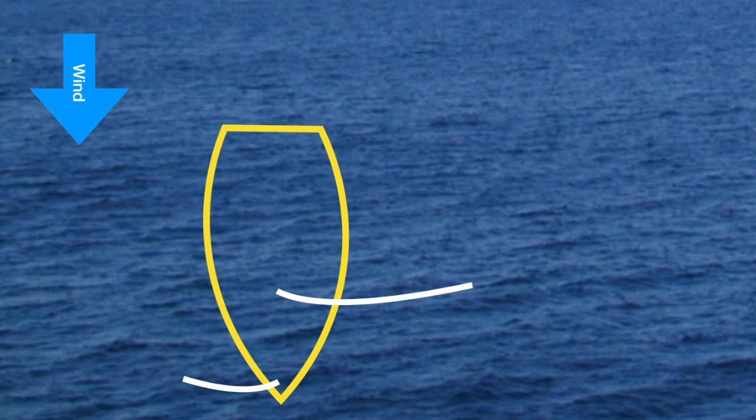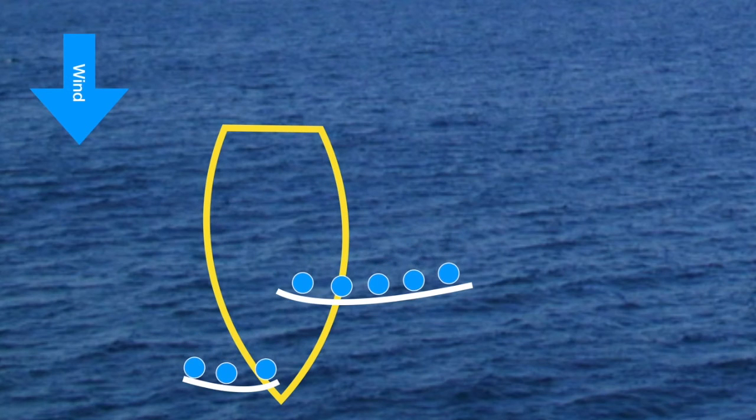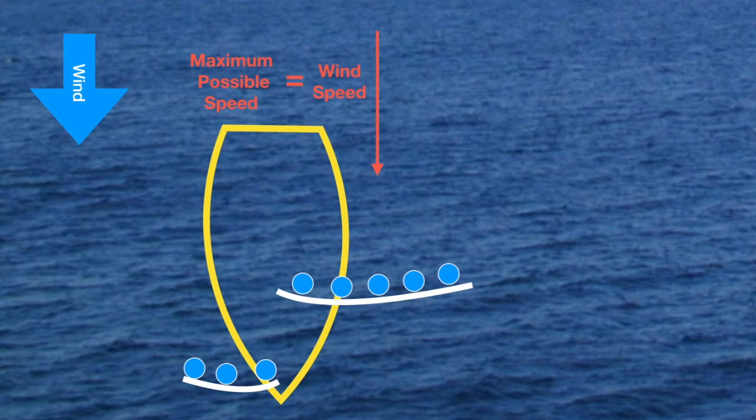The easiest way to start explaining how sails propel a boat forward is to imagine a boat running dead downwind with the sails set perpendicular to the breeze. The wind particles hit the sail and in turn create the force which propels the boat forward. In this configuration, and with the assumption that there is no friction between the boat and the water, the maximum possible speed of the boat is equal to the speed of the wind.